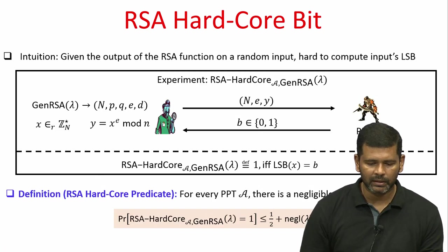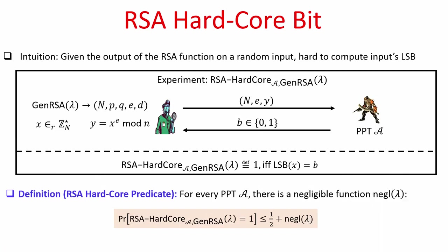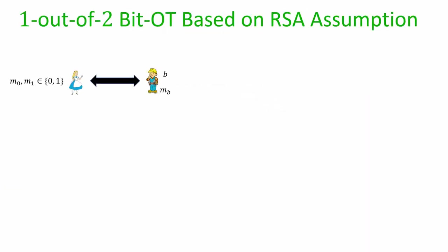Here is a quick recap of the RSA hardcore bit. The intuition is that if X is randomly chosen and someone gives you X^E mod n but does not tell you X — where n is the product of two random prime numbers P and Q — then computing the LSB of X is difficult. No polynomial-time algorithm can do better than probability half plus negligible, meaning computing the LSB of X is indeed a hard problem. That is the RSA hardcore bit.